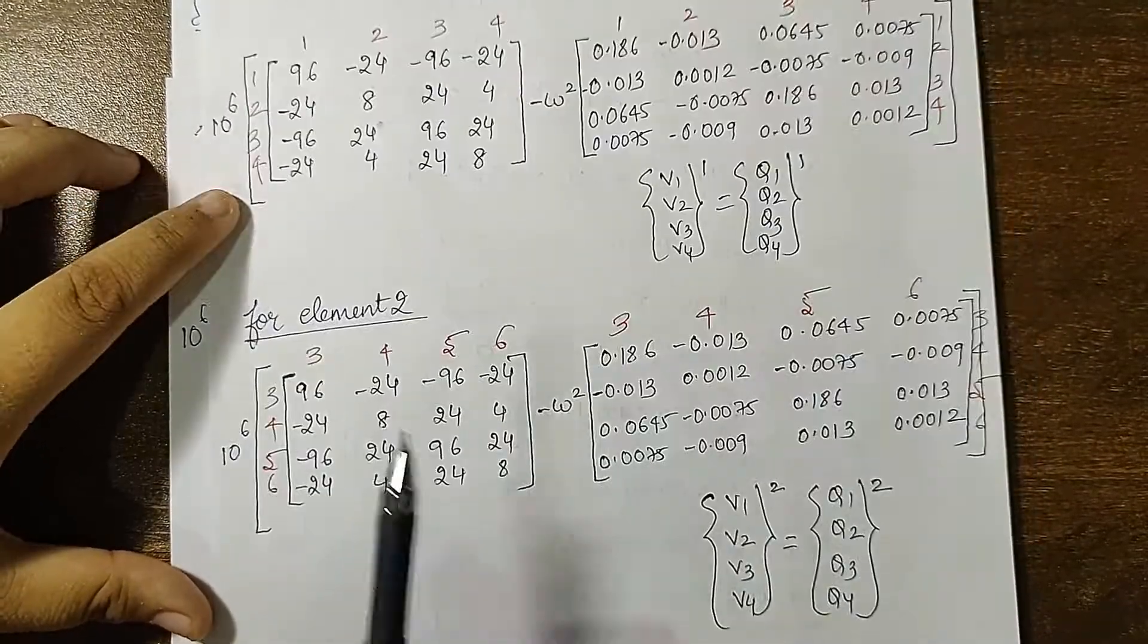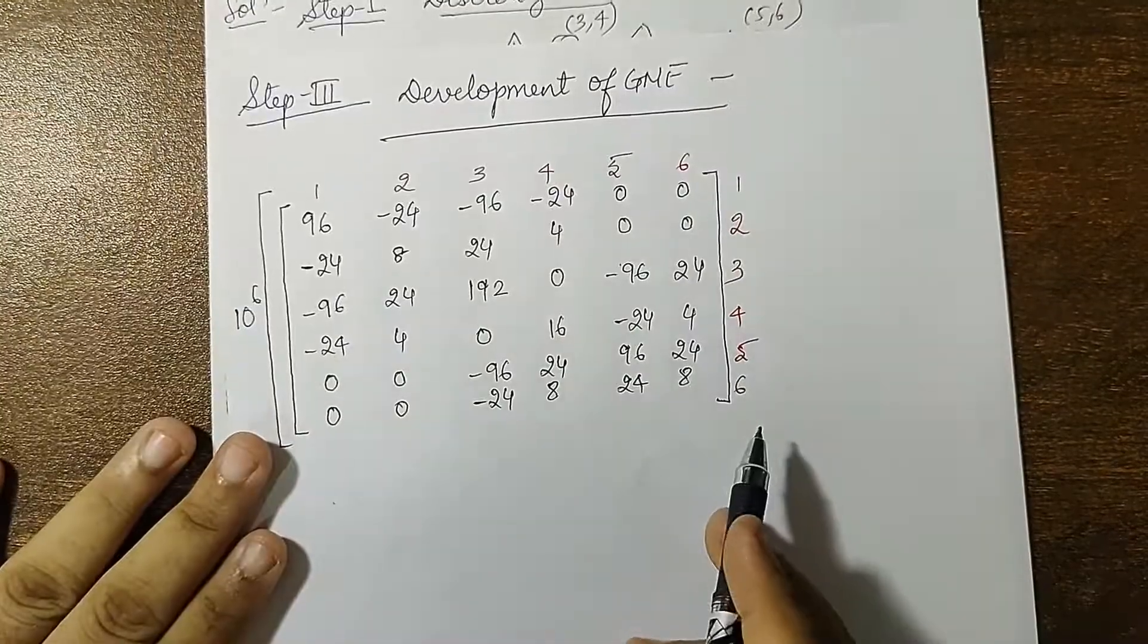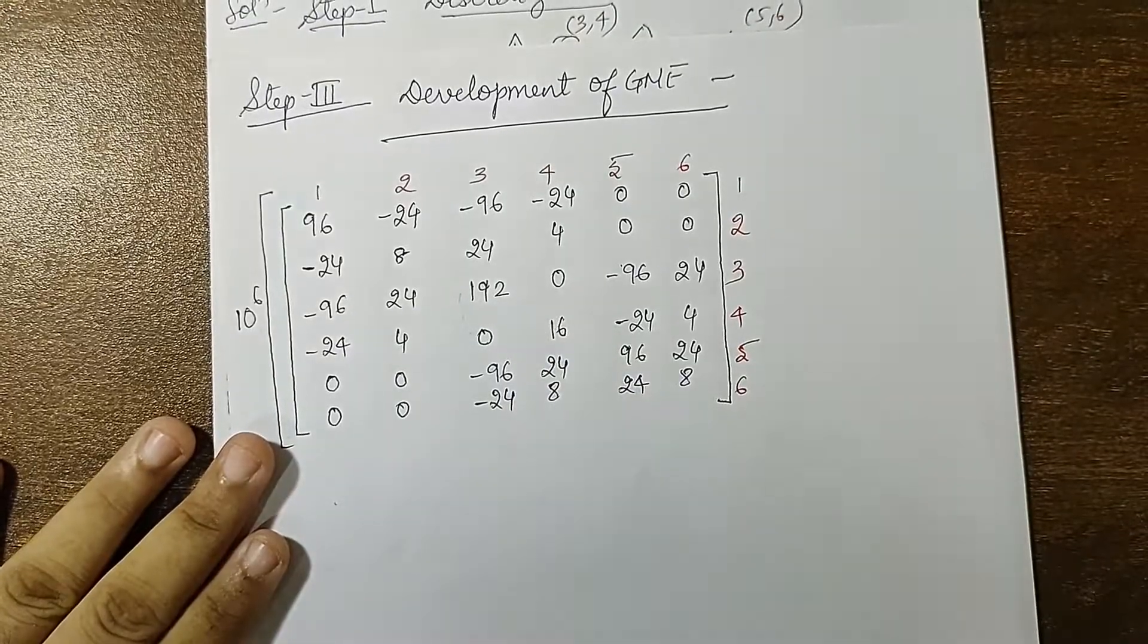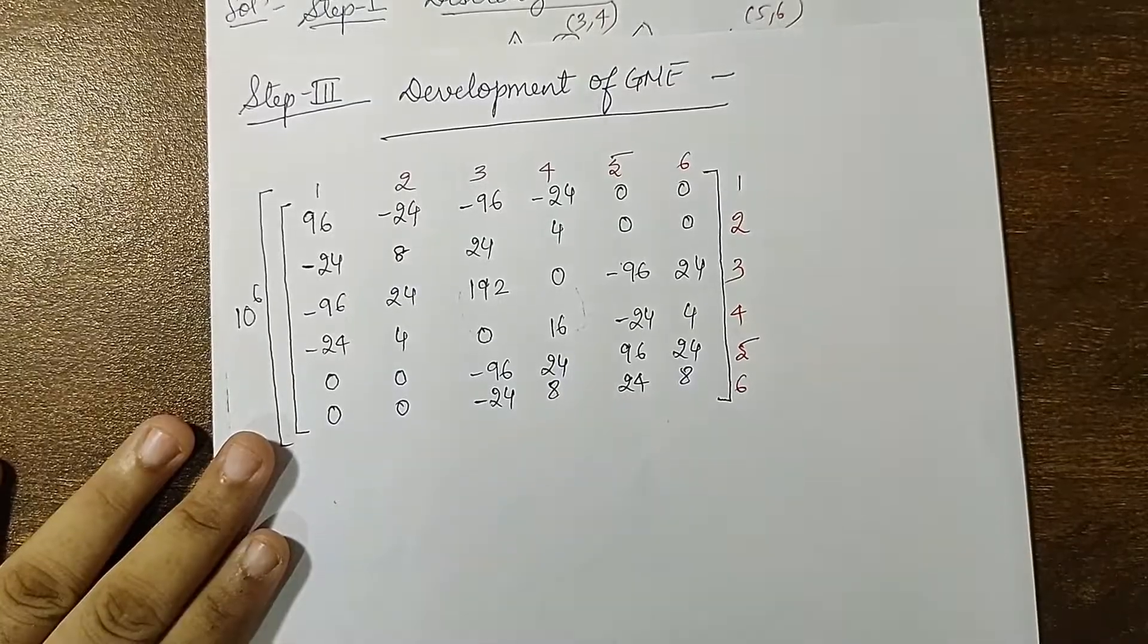I will be placing 1, 2, 3, 4, 1, 2, 3, 4 and then 3, 4, 5, 6, 3, 4, 5, 6 in its corresponding place. This is the first matrix that is formed. You can see here 3, 4, 3, 4. This matrix is common to both the elements, so there is an addition which has been performed here.